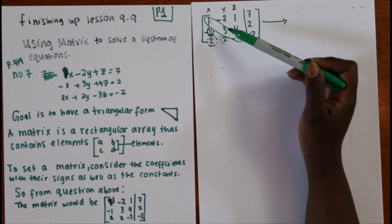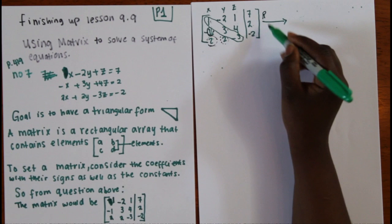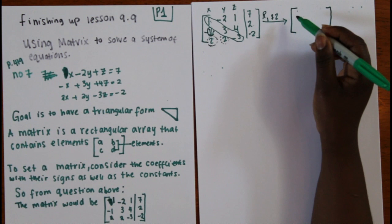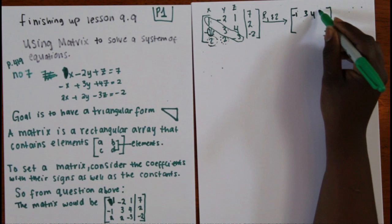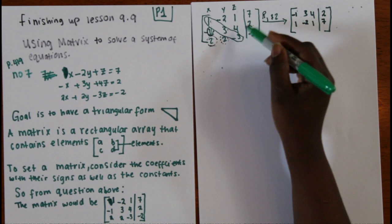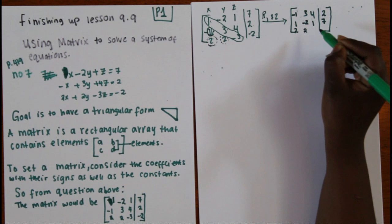So what I did for this question first is I changed row one and row two — I switched places with them. That allowed me to start the process. Once you switch them, row one becomes negative one, three, four, and two. Row two becomes one, negative two, one, and seven. Row three doesn't change, so row three stays the same: two, two, negative three, negative two.